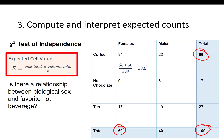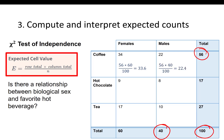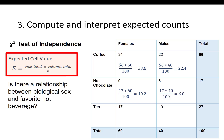For males and coffee, the row total is 56, the column total is 40, and the grand total is 100. So 56 times 40 divided by 100 gives an expected count of 22.4. Continuing with the remaining cells: females and hot chocolate — 17 times 60 divided by 100 is 10.2; males and hot chocolate — 17 times 40 divided by 100 is 6.8; females and tea — 27 times 60 divided by 100 is 16.2.